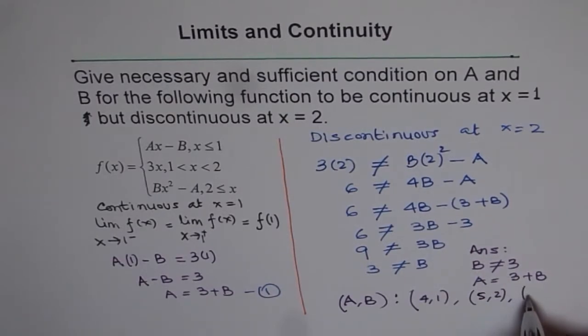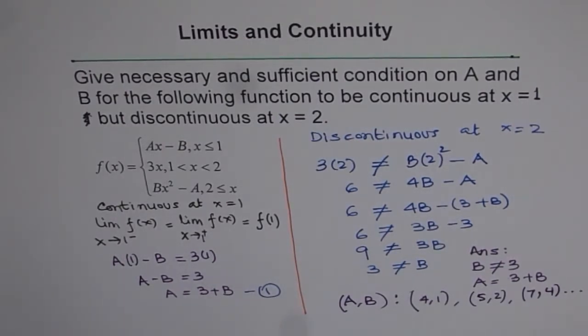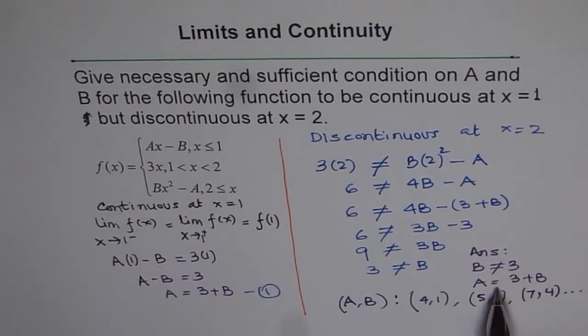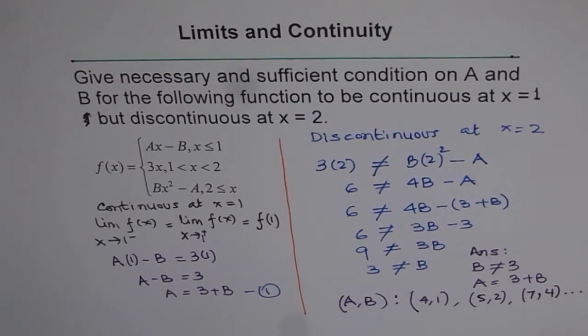It could be 4. If it is 4, then A will be 7. So 7 and 4 like this. So all possible answers could be written like that. But B not equals 3. So that is the condition. A equals 3 plus B and B not equal to 3. I hope you appreciate and love this. Thank you.